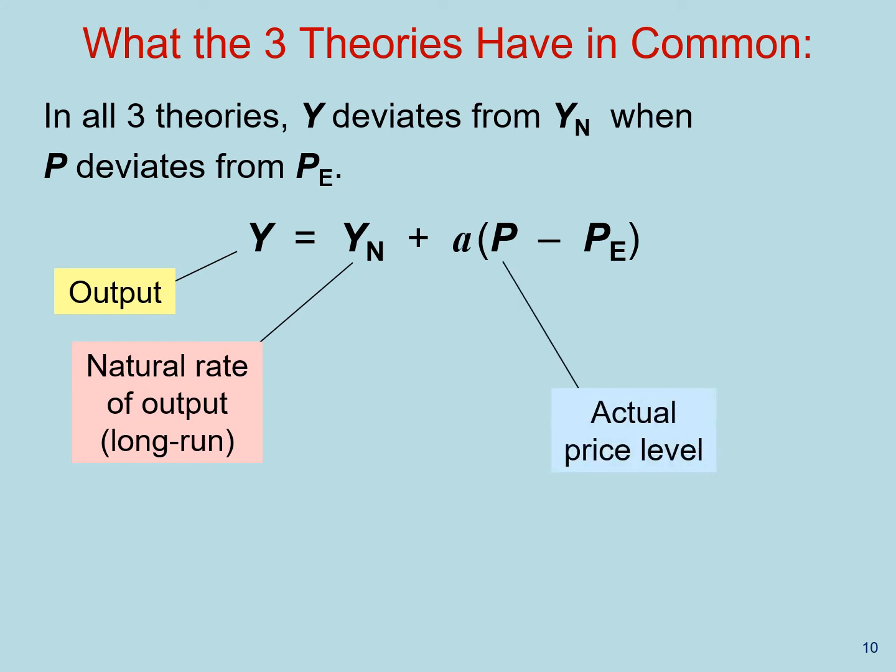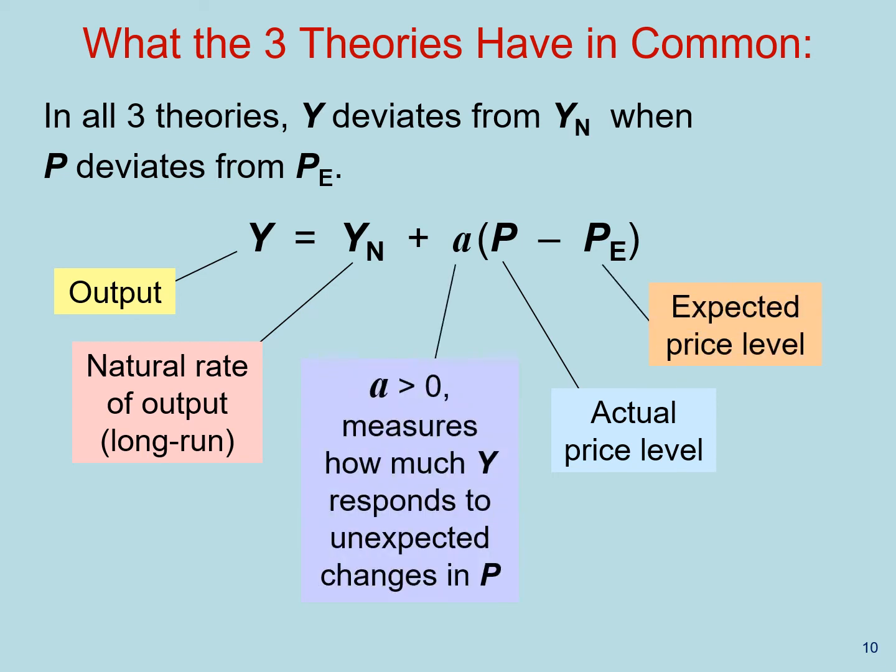In here, we have the actual price level and the expected price level. There is this parameter A, which is greater than zero, and it measures how much output responds to unexpected changes in prices.